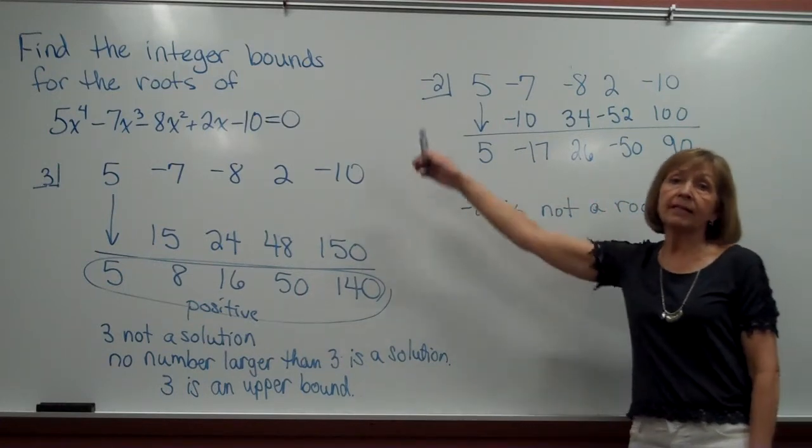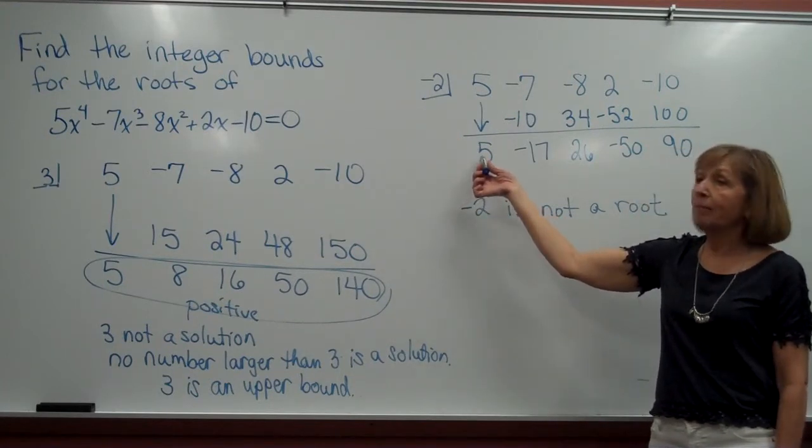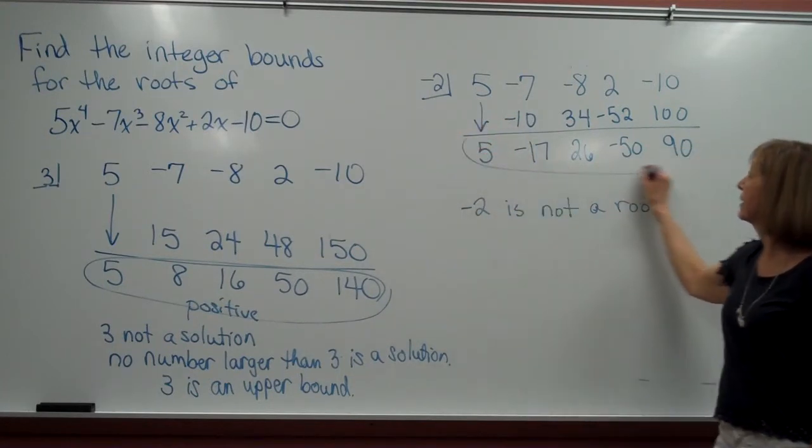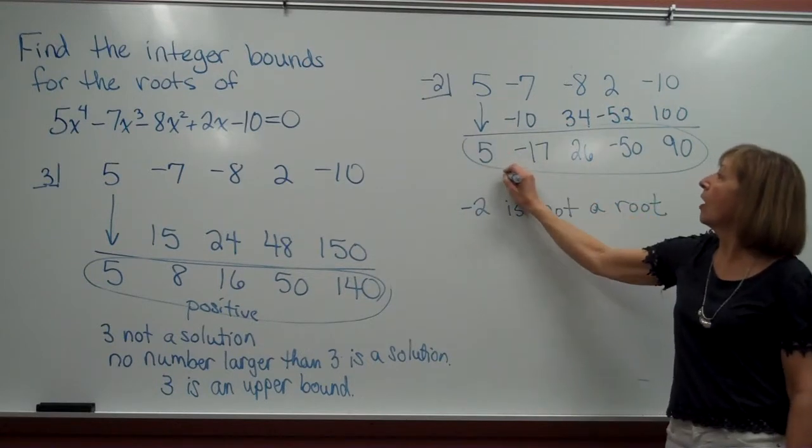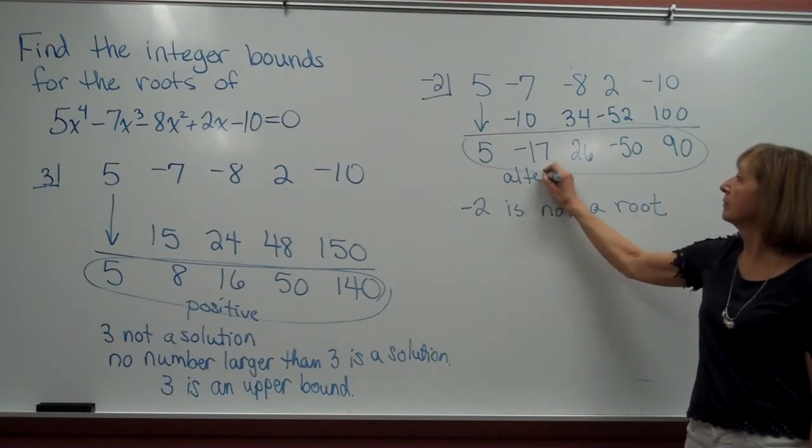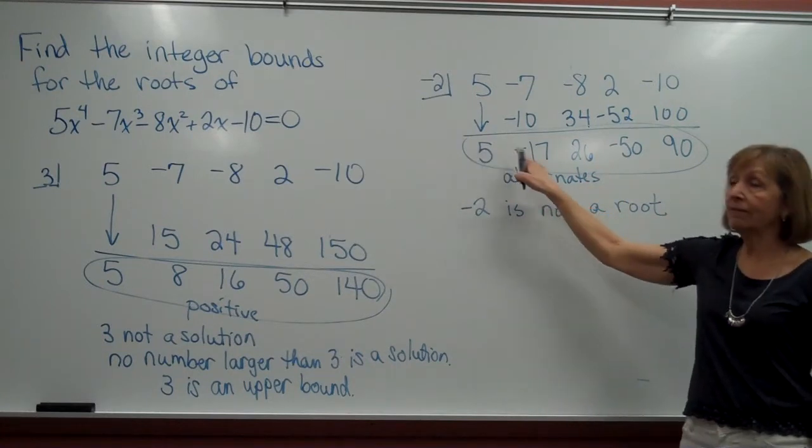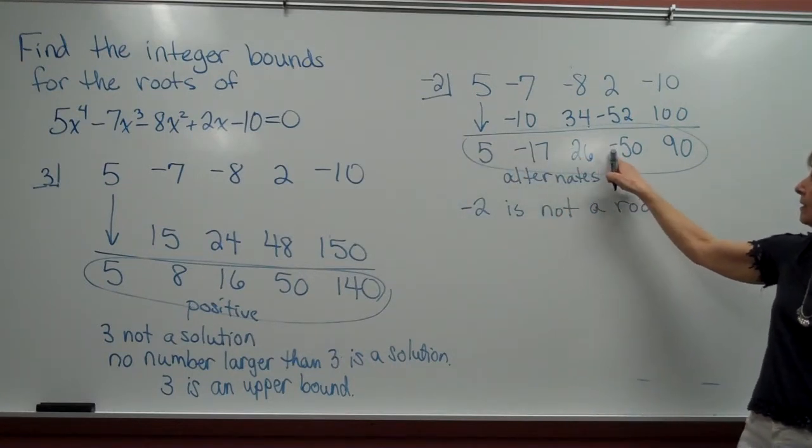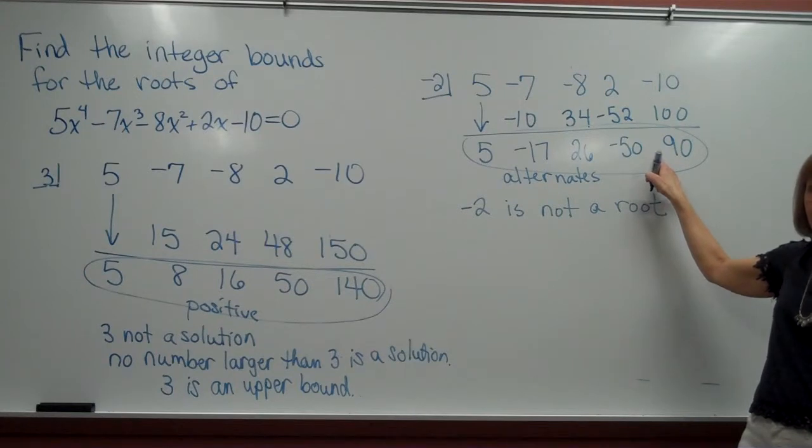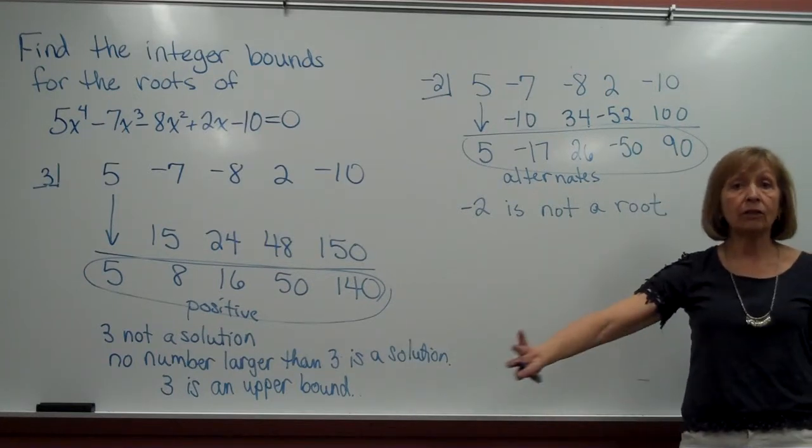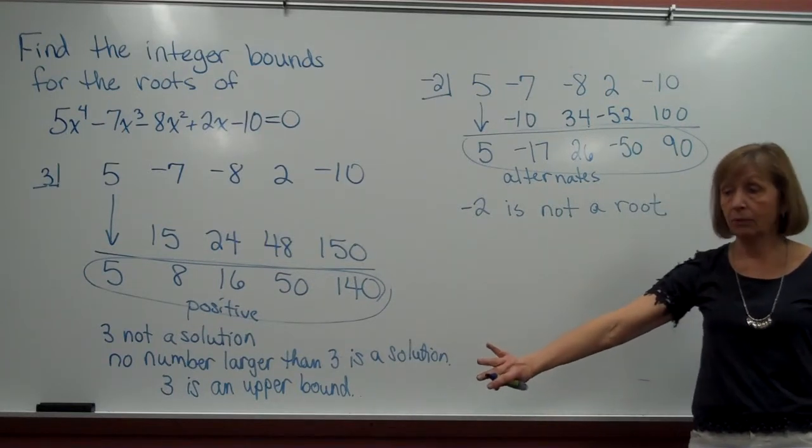Also, when I divided by the negative number, the bottom row of my synthetic division table alternates in sign. So positive, negative, positive, negative, positive. So no number littler than negative 2 will be a root.